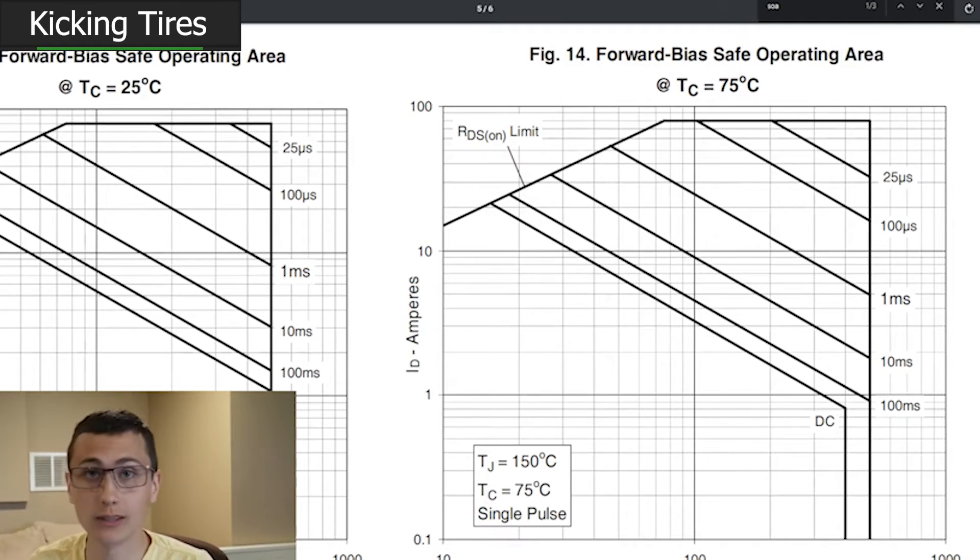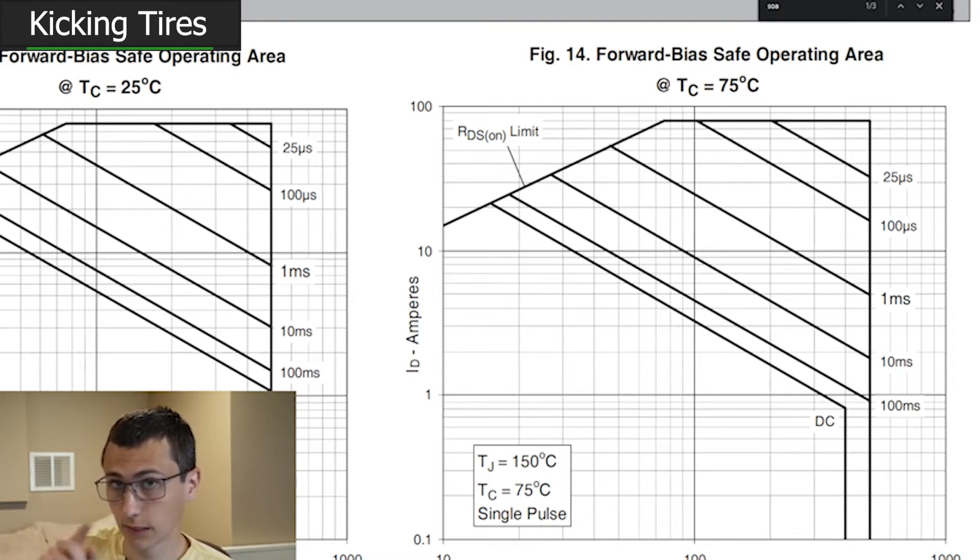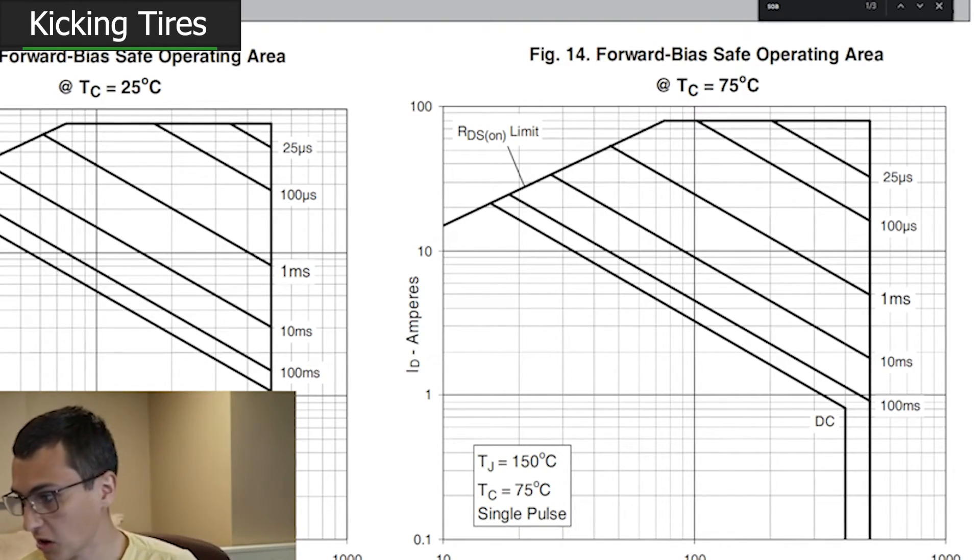I've got the safe operating area curve here. The one on the right is the one that is important, because that is while the part is hot. If we look at the 25 microsecond curve, when there is 90 volts across, and that is the maximum, there should be an over voltage protection that protects it beyond that. So the 100 volts applied, 25 microseconds, that's well within the safe operating area. That pulse could be 10 times longer, and we would still be okay, as long as it's only one pulse. And it should be, because we've got a programmable fault retry timer with that RC time constant.